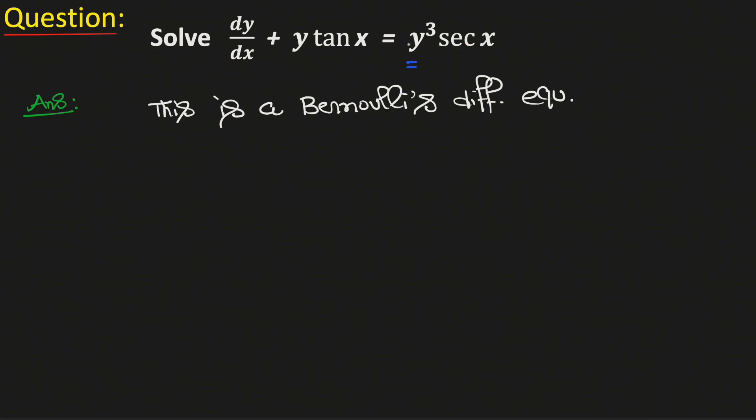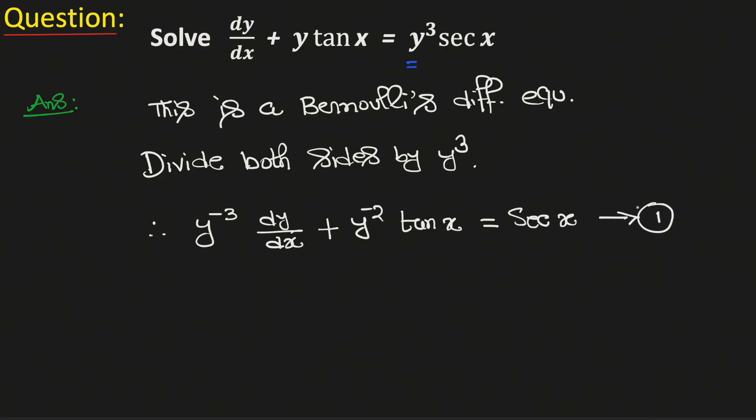In the first step we will divide both sides by y cube. By doing so we get y to the power minus 3 dy/dx plus y to the power minus 2 tan x equals sec x. And name this equation number 1.